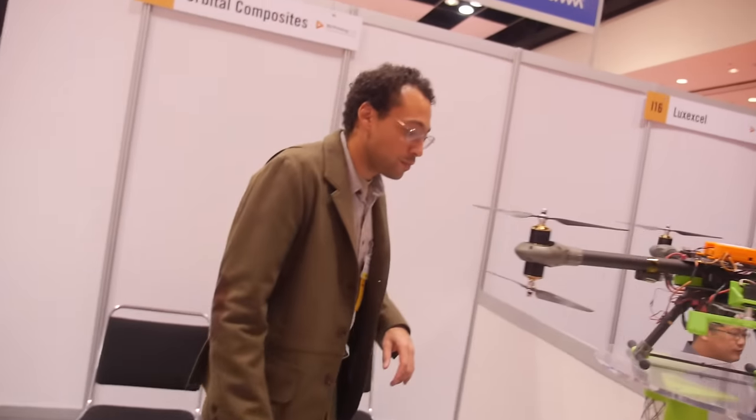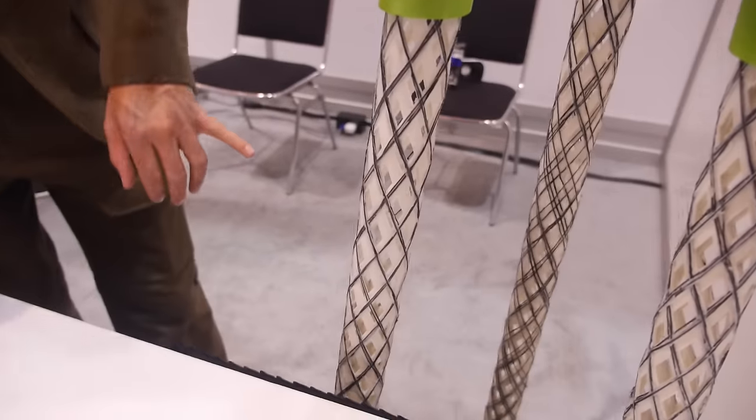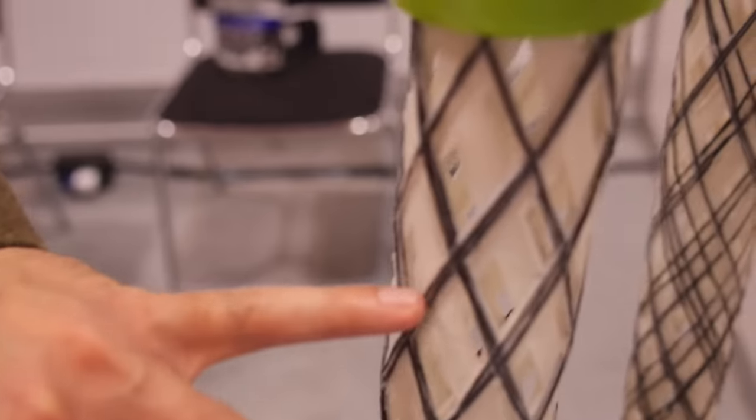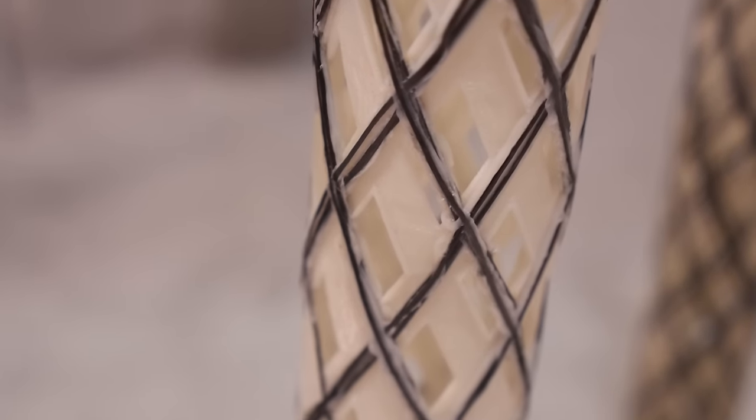So what's going on here? These are our 3D printed carbon fiber table legs. These are actually made with the coaxial extruder.